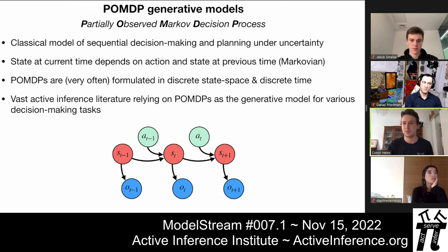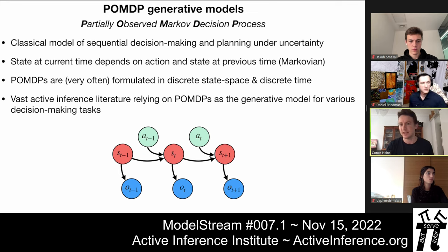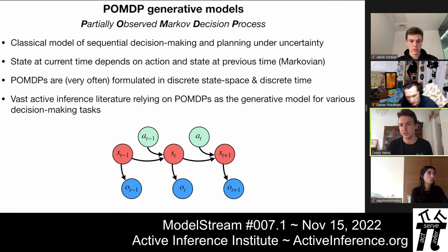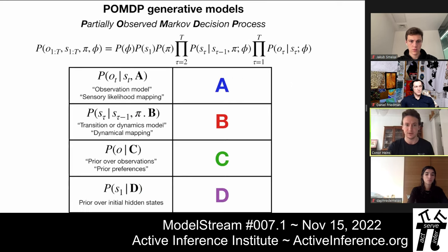The reason we use this discrete POMDP generative model for active inference is not just because of its applications to sequential decision-making and planning, but also because there's a massive pre-existing active inference literature since 2010–2011 on using POMDPs as generative models for decision-making tasks. All the mathematics for doing active inference with these models is already done, so we didn't have to invent any new math or theory to code this up.